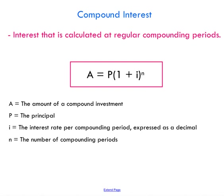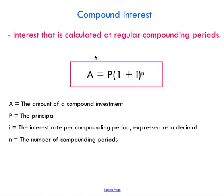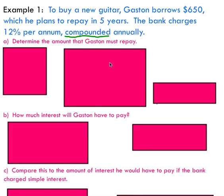In the first example, Gaston borrows $650 to buy a new guitar, which he plans to repay back in five years. He borrows this money from the bank, who's charging 12% per annum — that's per year — compounded annually. This is a little different than a simple interest problem because we're told that the interest is compounded. If something is compounded, you're dealing with compound interest, not simple interest — that's a very important distinction.